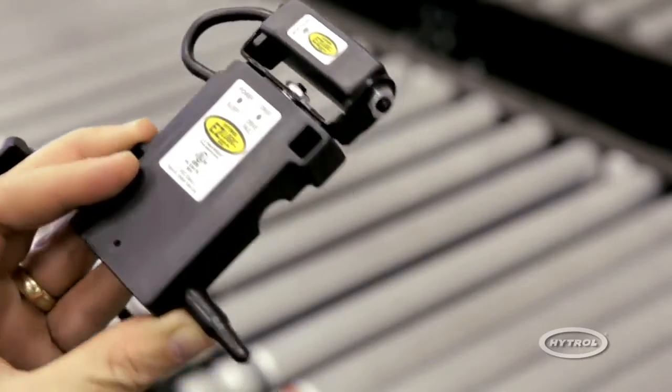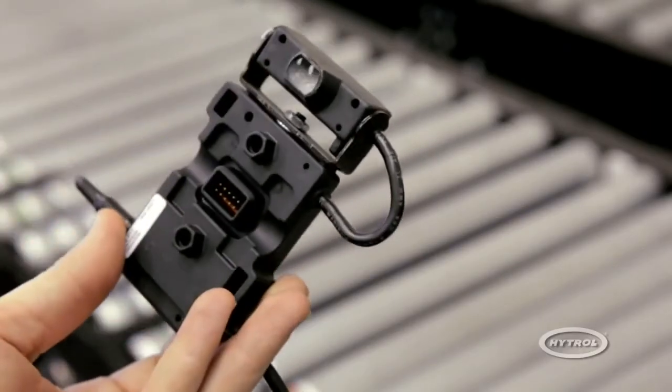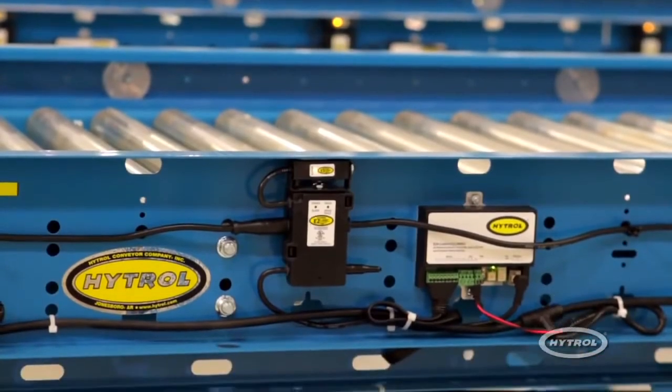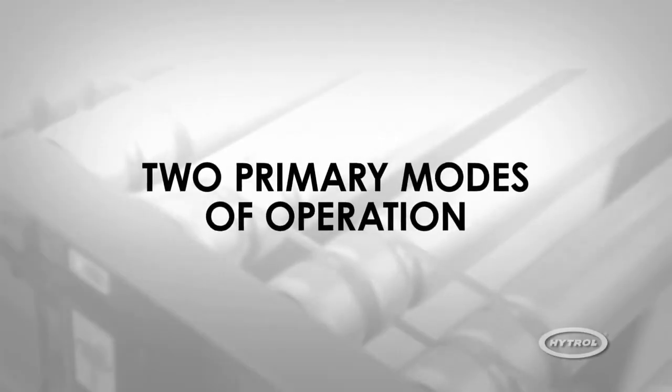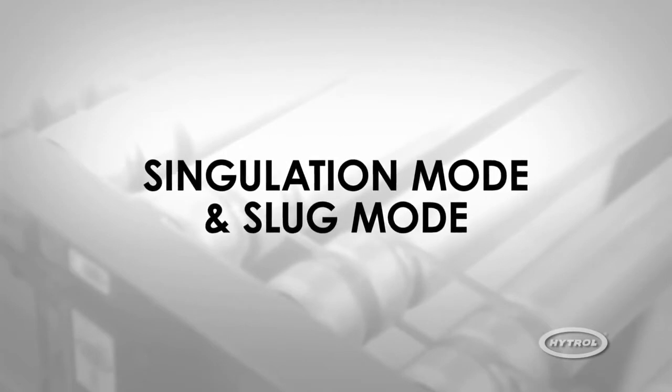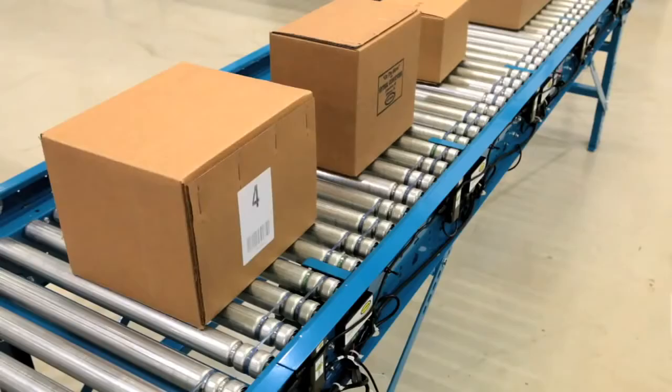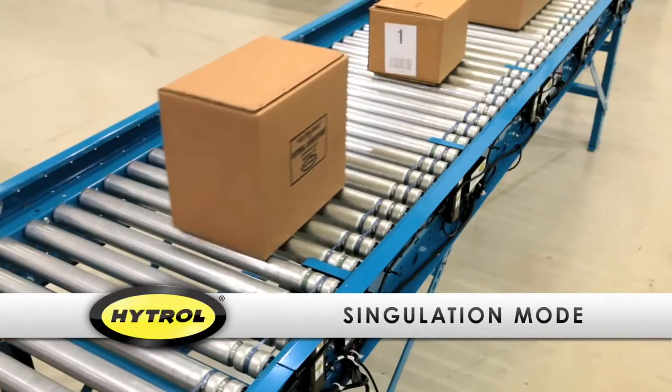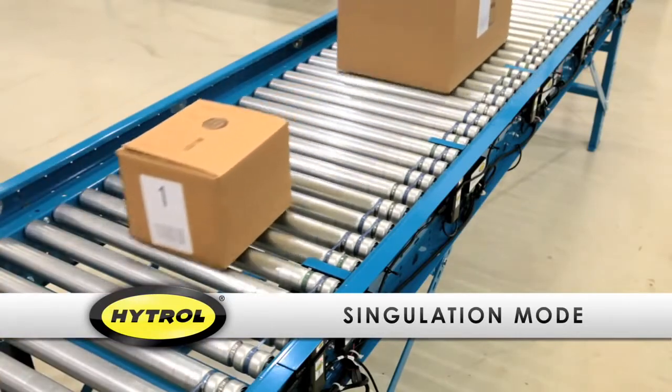The Hytrol EasyLogic system offers a variety of special functions to enhance product flow. The two primary modes of operation for transporting and accumulating product are Singulation Mode and Slug Mode. Singulation Mode provides the system with better carton control by releasing each zone individually.